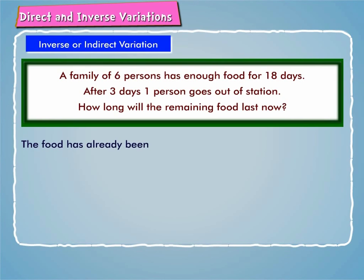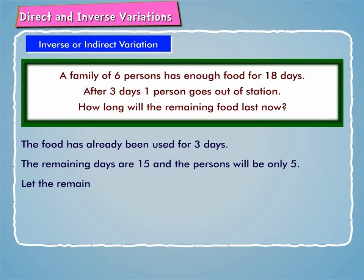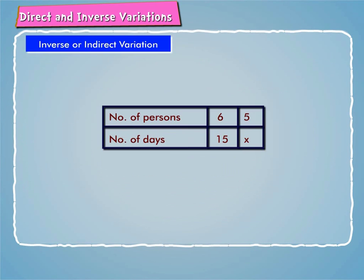The food has already been used for 3 days. The remaining days are 15 and the persons will be only 5. Let the remaining food last for x days. We write the given information in the table as shown on screen.